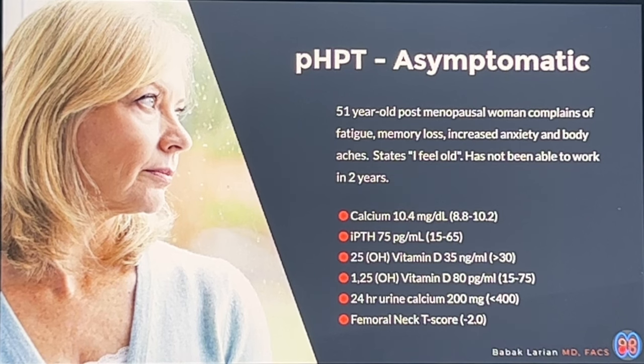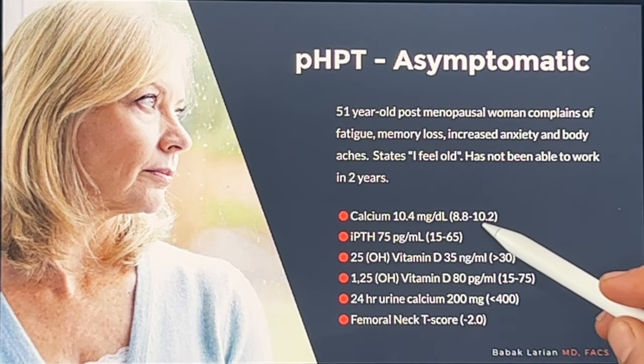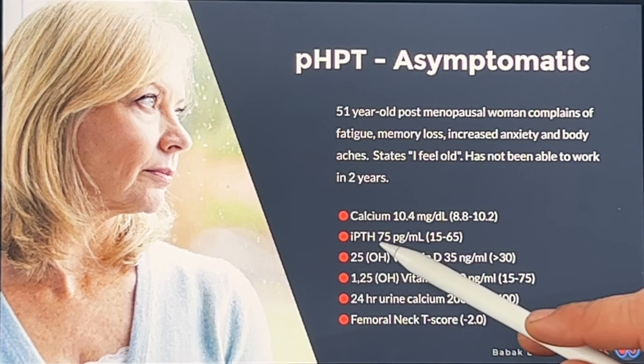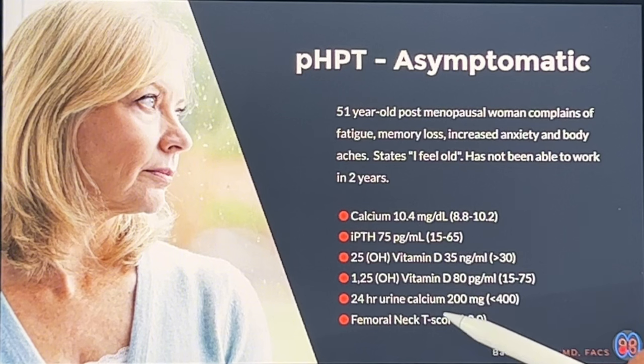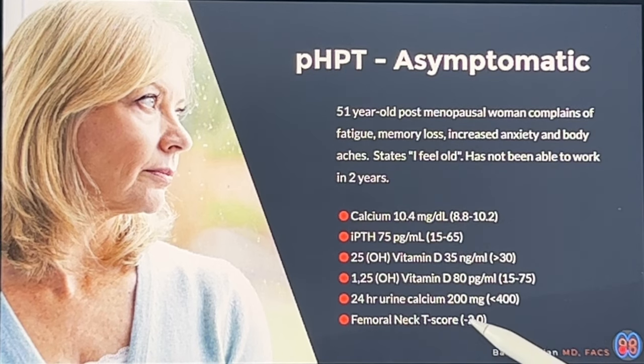Her calcium is slightly elevated at 10.4 — just above the upper limit of 10.2. PTH is slightly elevated at 75, above the upper limit of normal of 65. Vitamin D is in the low normal range, and bone density shows osteopenia, not osteoporosis. This is technically an asymptomatic patient, even though she's devastated by her symptoms and can't work. By guidelines and definitions, she's asymptomatic because she has no fractures, no kidney stones, and no osteoporosis on bone density.